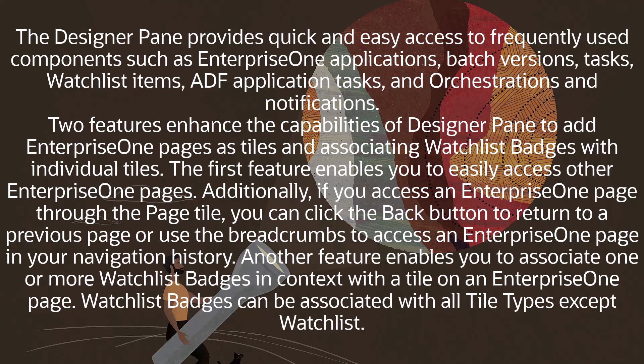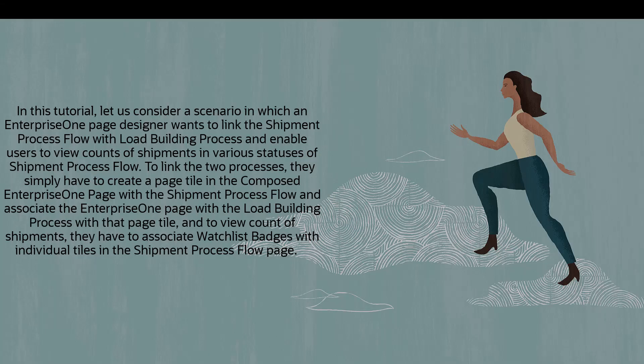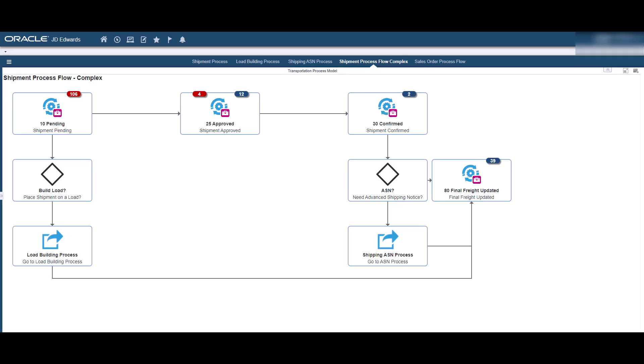Watchlist badges can be associated with all tile types except watchlist. In this tutorial, let us consider a scenario in which an Enterprise One page designer wants to link the shipment process flow with the load-building process and enable users to view count of shipments in various stages of the shipment process flow. They simply have to create a page tile in the composed Enterprise One page with the shipment process flow and associate the Enterprise One page with the load-building process with that tile. And to view count of shipments, they have to associate watchlist badges with individual tiles in the shipment process flow page. For this tutorial, let's assume that you have already built a few composed pages with tiles, lines, and arrows representing a process flow.